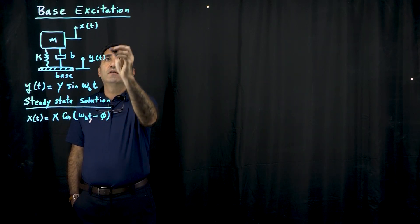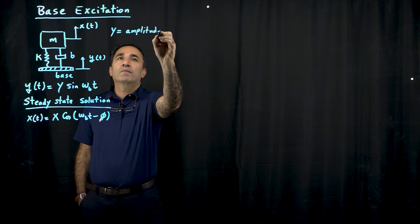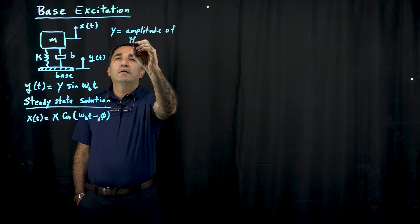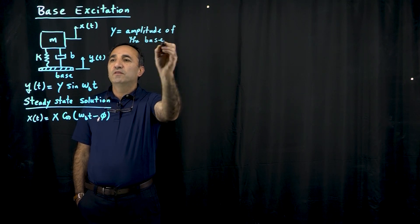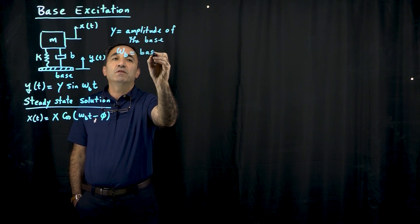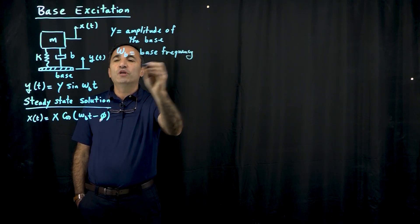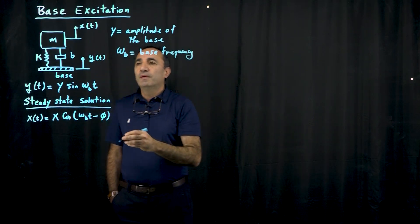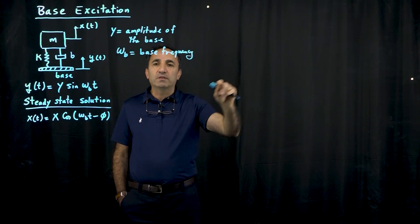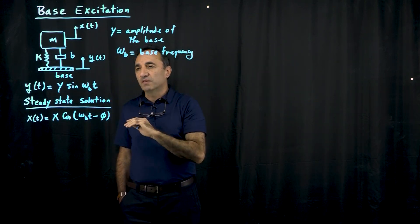let's say it's a harmonic excitation. So y here is the amplitude of the base. And this omega b, I'm going to call this the base excitation, base frequency rather. So basically this is your input frequency. Imagine a car is going on a bumpy road, but the bumpy road is the profile is a sine wave, let's say.